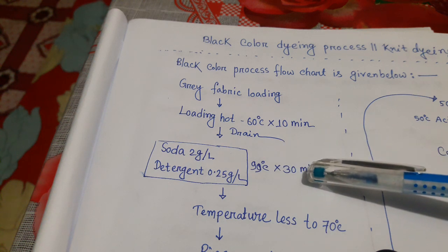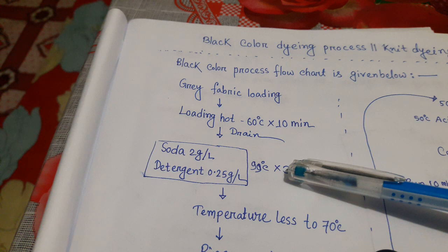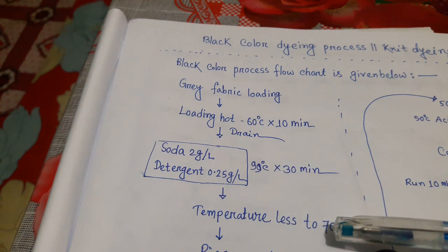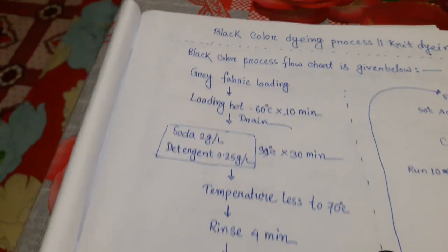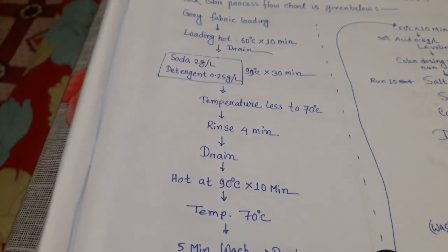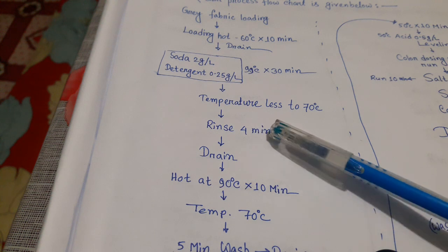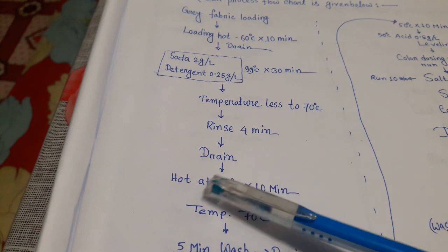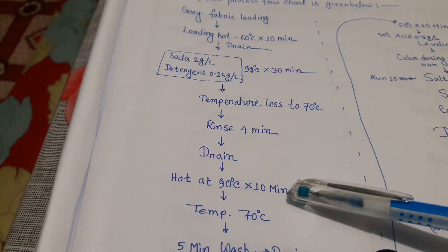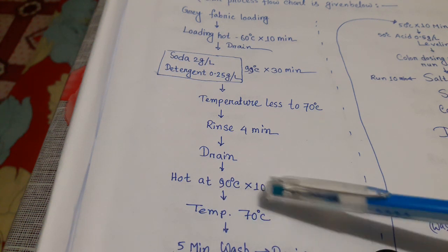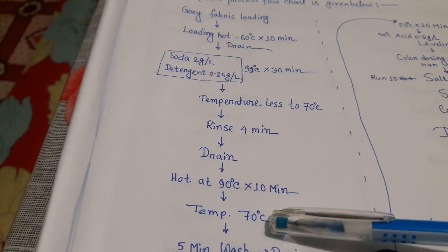Run at 99 degrees centigrade for 30 minutes. Then bring the temperature down to 70 degrees centigrade and rinse for 4 minutes. Then drain. Hot wash at 90 degrees centigrade for 10 minutes, then temperature down to 70 degrees centigrade.